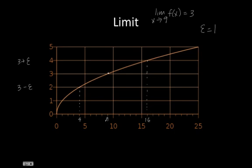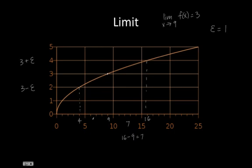So now we know that our two possible delta values are either 7 because 16 minus 9 equals 7, or our second possible delta is 9 minus 4 equals 5. So what is the largest delta value that we can choose?